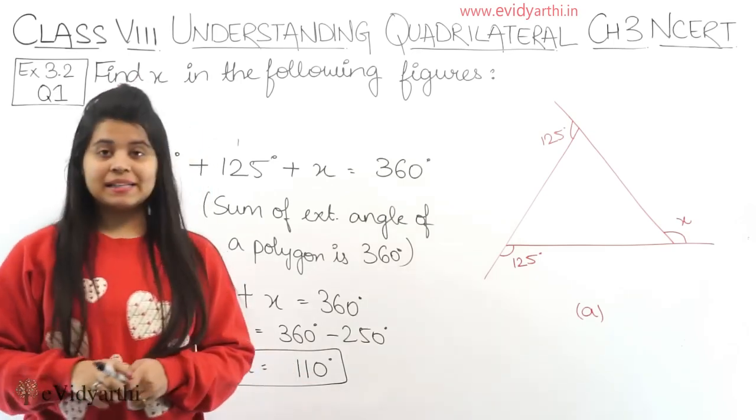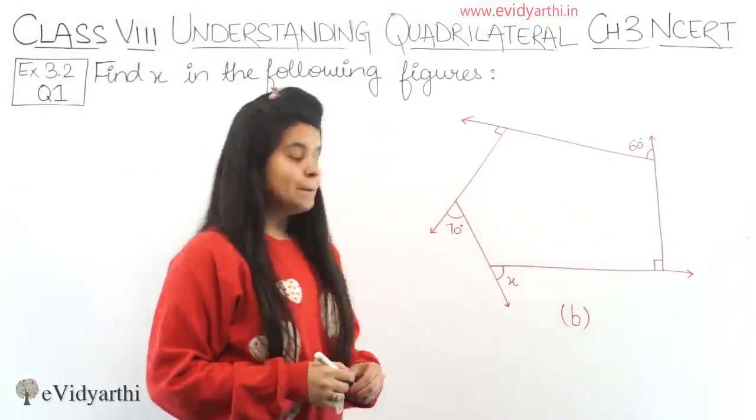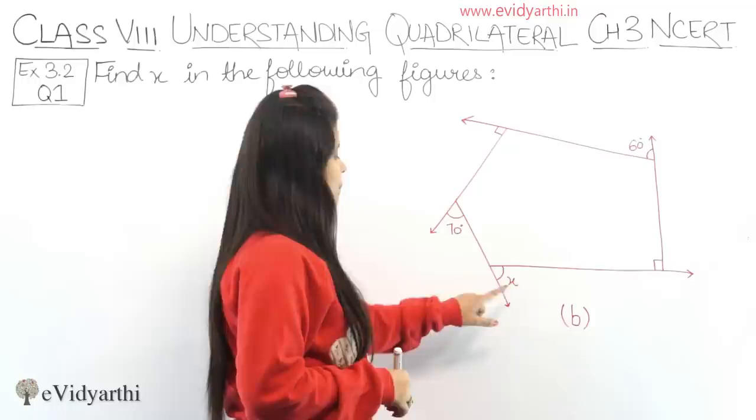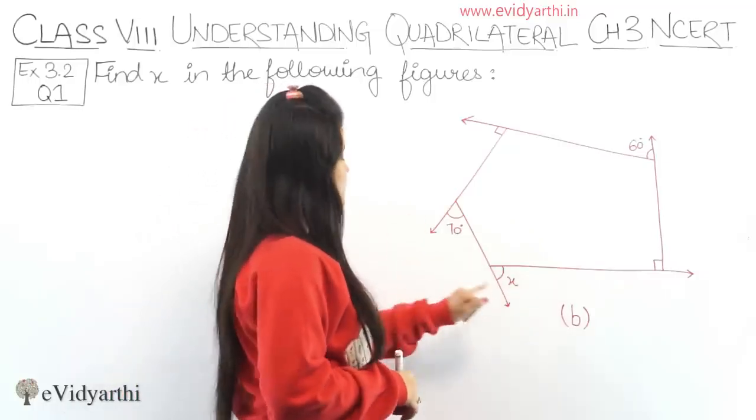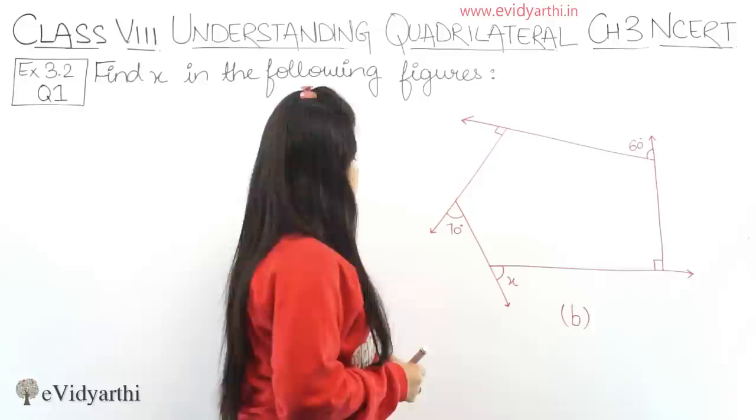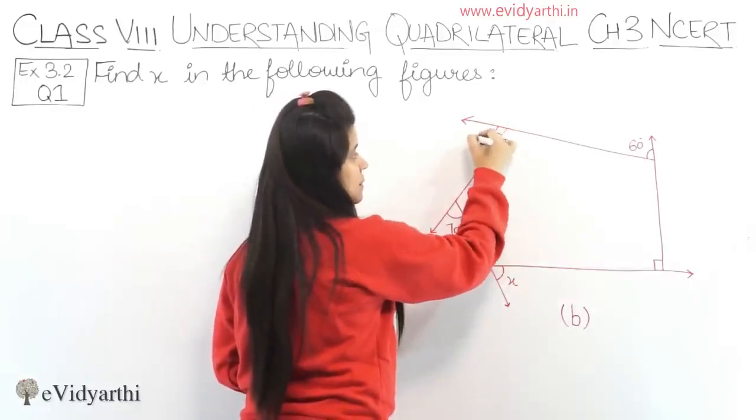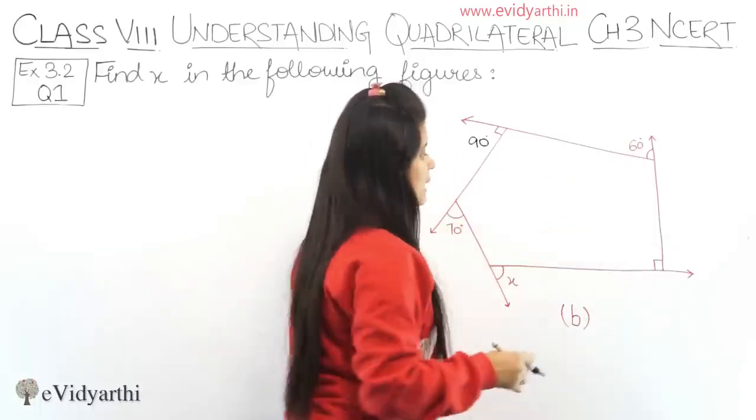Now let's come to the next part. Now coming to part B. In part B again you have to find the value of x. Here x is an exterior angle. What are the other exterior angles? This is x, this is 70 degrees, this is an exterior angle, and from the shape this is 90 degrees. Next, this exterior angle is 60 degrees. Here the interior angle given is 90 degrees.